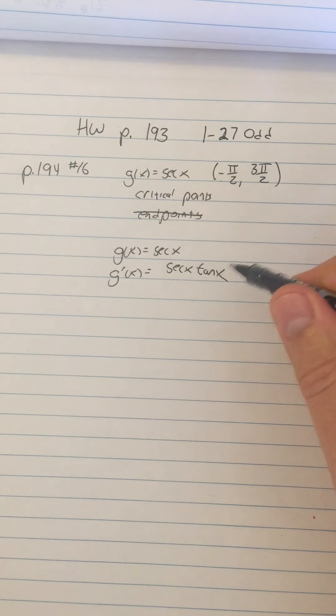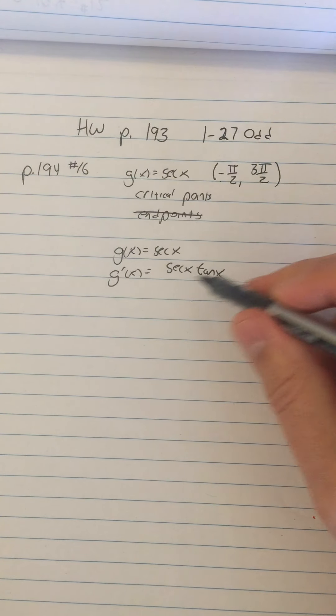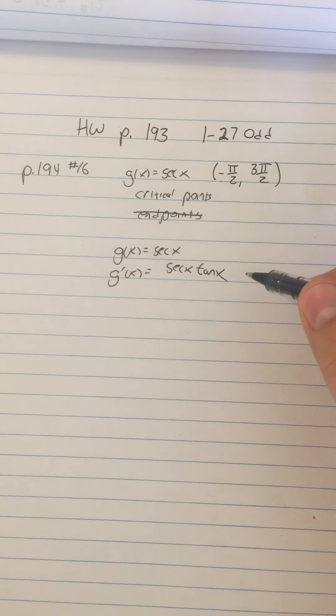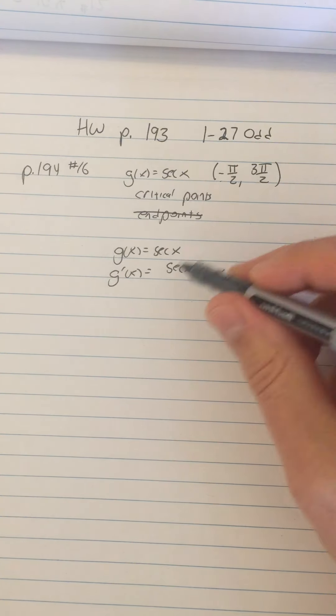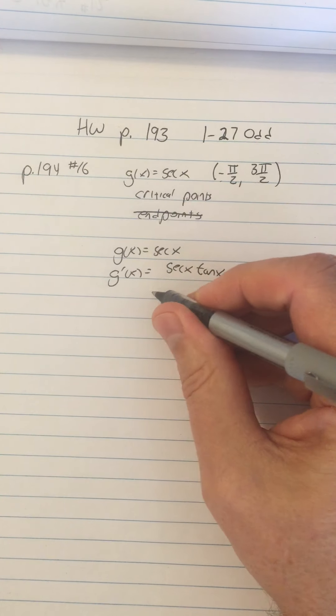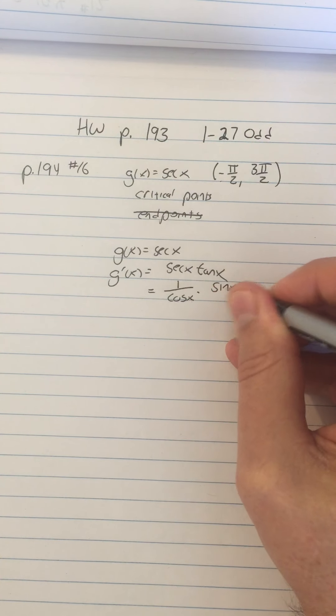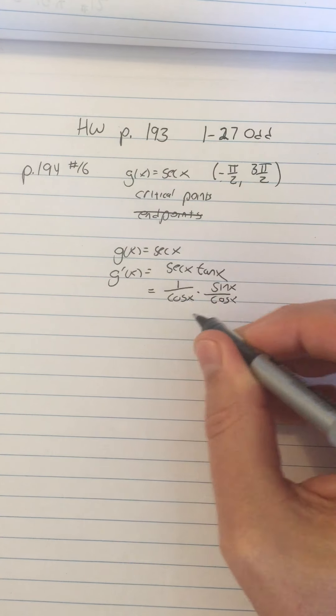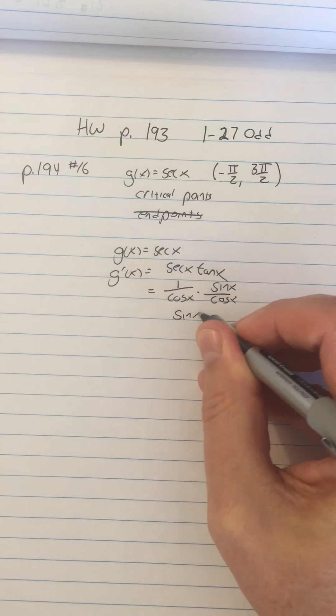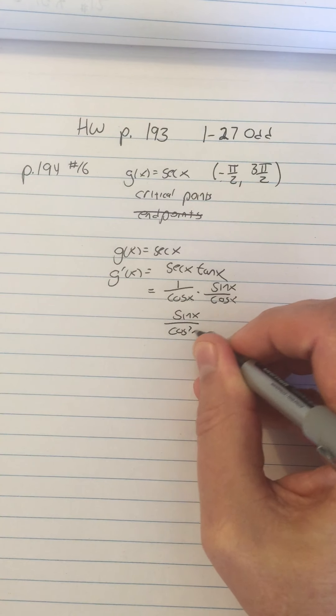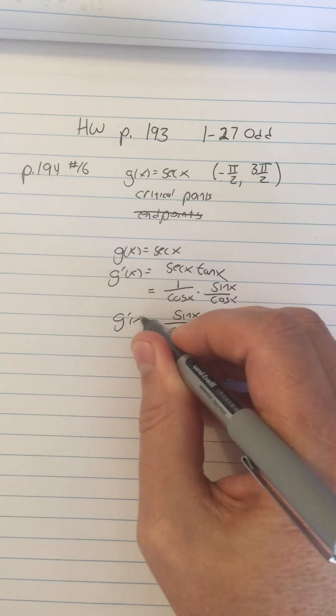The problem is how am I going to identify the points where g prime is zero and the points where g prime is undefined. It will be easier if I could see this as a fraction. Could I write this as a fraction? Sure, it's 1 over cosine times sine over cosine, which is sine of x over cosine squared x. That's what g prime of x is.